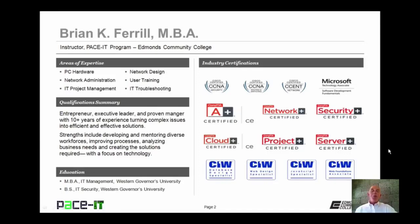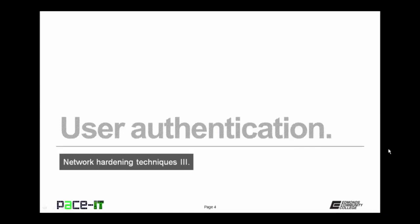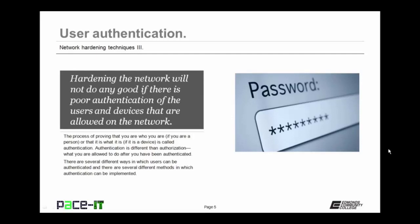Good day, I'm Brian Farrell, and welcome to PACE IT's session on Network Hardening Techniques Part 3. Today I'm going to discuss user authentication and then talk about some authentication and authorization methods. Hardening the network will not do you any good if there is poor authentication of the users and devices allowed on the network. The process of proving that you are who you say you are — for a person — or that you are what you say you are — for a device — is called authentication. Authentication is different than authorization — authorization is what you are allowed to do after you have been authenticated.